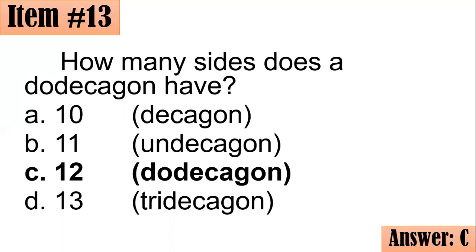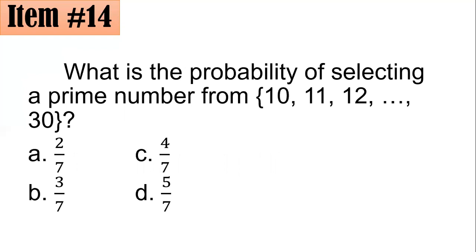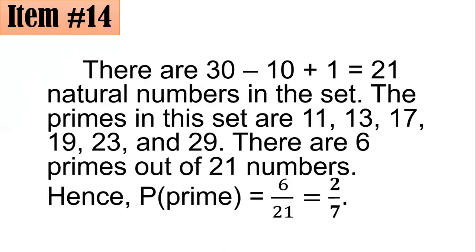Number 14. What is the probability of selecting a prime number from 10, 11, 12, until 30? So, from this set of natural numbers from 10 until 30, we have to determine first how many primes are there. But did you answer 2 sevenths, 3 sevenths, 4 sevenths, or 5 sevenths? So, the shortcut, if we are talking about a consecutive number sequence or a sequence of consecutive integers, the shortcut to determine how many there are is you subtract the largest by the smallest plus 1. That's the shortcut. So, you have 30 minus 10 plus 1. That's 21. So, there are 21 numbers in that given set.